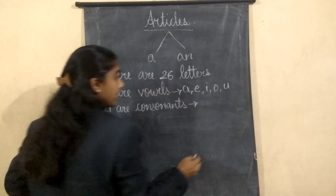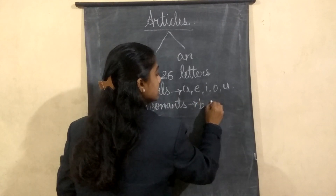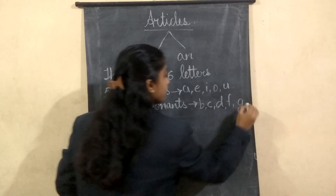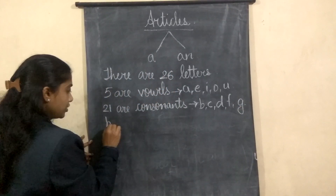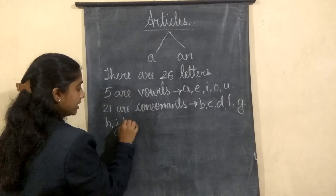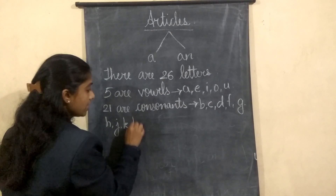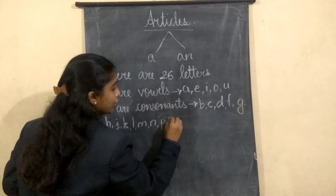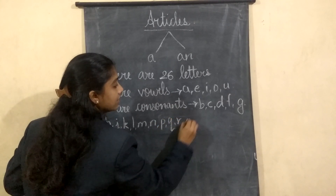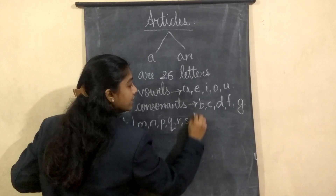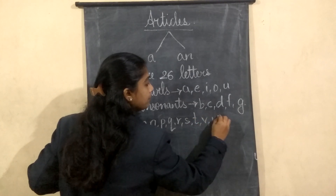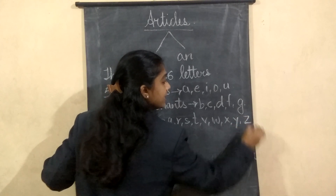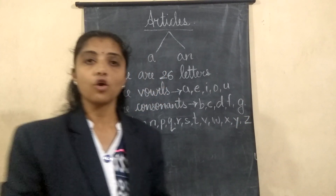The consonants are: b, c, d, f, g, h, j, k, l, m, n, p, q, r, s, t, v, w, x, y, and z. These are the consonants.